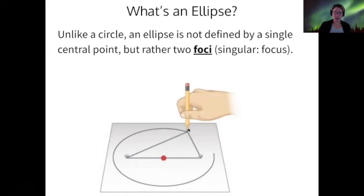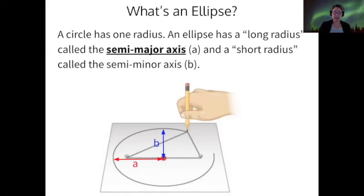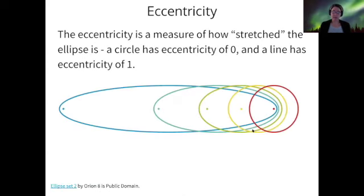And so a circle just has a single radius, but an ellipse has two different important distance units. One of them is called the semi-major axis, and that's basically the long radius, and that's always called A. And then it has a short radius, which is called the semi-minor axis, which we denote by B.